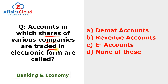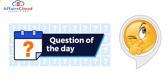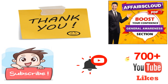Question of 9th April 2022: Accounts in which shares of various companies are traded in electronic form are called Demat accounts, or Dematerialized accounts. Question of the day: When the purchasing power of money decreases, what happens to the rate of inflation? Tell your answer only in the comment box.